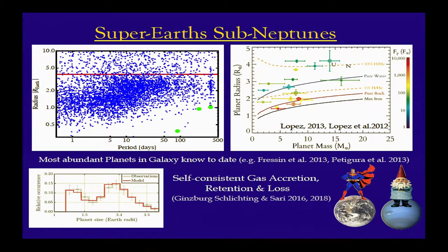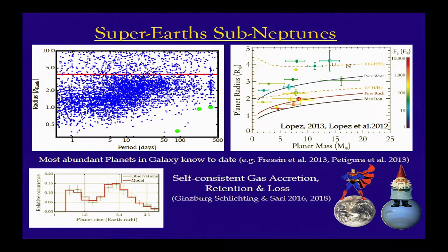In some cases we are lucky enough to have not only the planet radii from transits, but also their masses. Once you have both radius and mass, the obvious thing to do is calculate a bulk density. And although this is very little information, it actually already tells us that many of these planets have densities so low that they need to be engulfed in some sort of hydrogen-helium envelope — so they cannot all just be rocky cores.